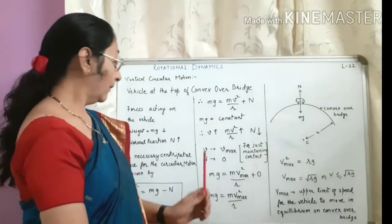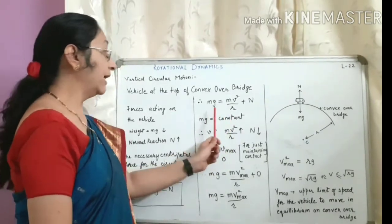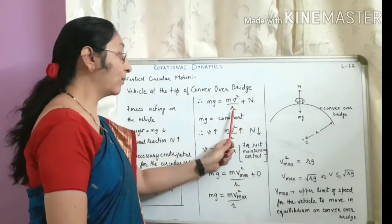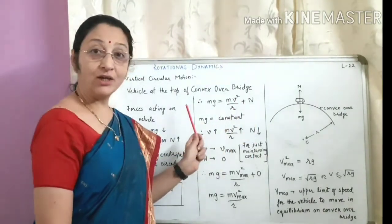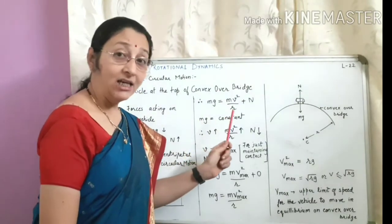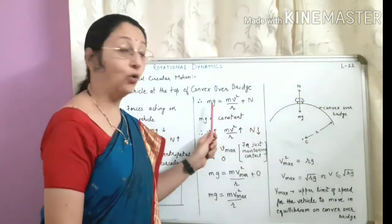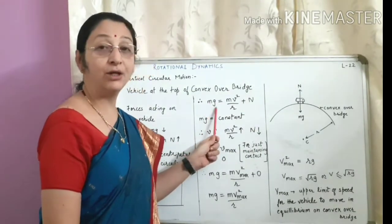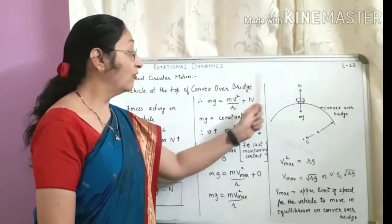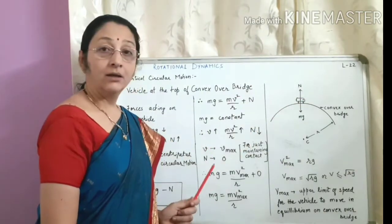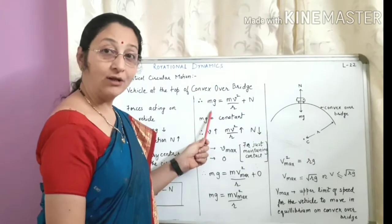Rearranging the equation, we write Mg = Mv²/R + N. The meaning of this equation is that the sum of the centripetal force and the normal reaction is always a constant, that is Mg, the weight of the vehicle. So this left-hand side will always remain constant.